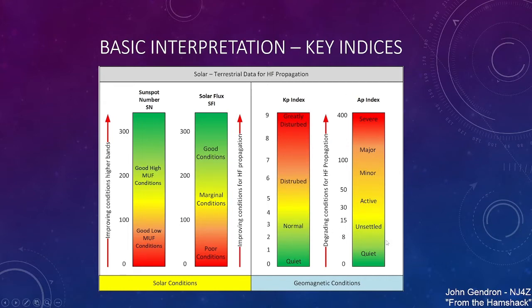On this side, we look at the geomagnetic conditions. That's the KP and the A. And you're degrading propagation as we go vertically on this scale, zero through nine, zero through 400. You start looking at noise levels. Zero through two on the KP, you're looking at S0 to S2 noise for background noise. And then when you get to three to four, you might have an S3 noise level to an S5 noise level.